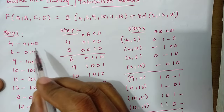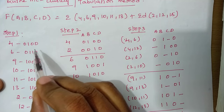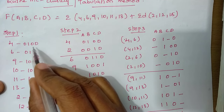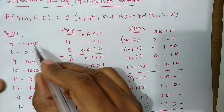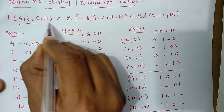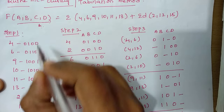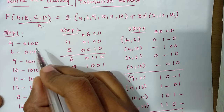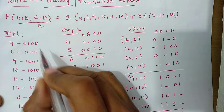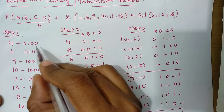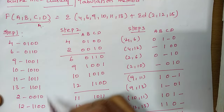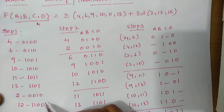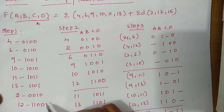Step 1 is to write each minterm in binary form. So 4 is written as 0100 in 4-bit binary form. We have taken 4 bits because the number of variables given is 4. So 4 is written as 0100, 6 is written as 0110, and so on up to the given minterms. The don't care conditions also have to be represented in 4-bit binary form.